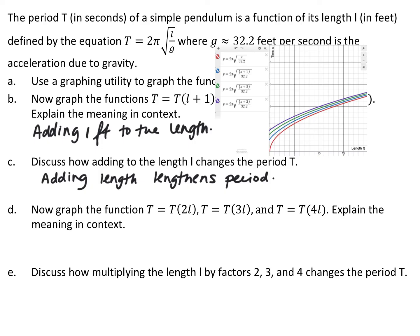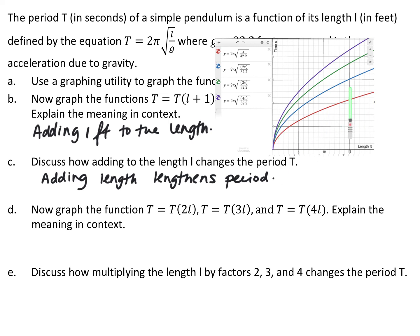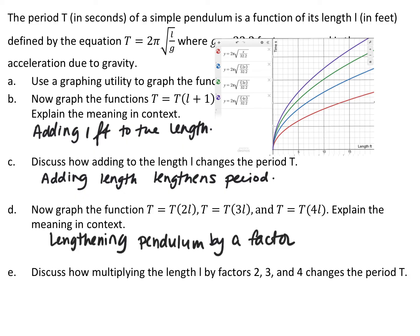Now we look at T(2l), T(3l), and T(4l). The red one is still the original, and each subsequent graph uses 2l, 3l, and 4l. When multiplying length by a factor, we're lengthening the pendulum by that factor, and we can see it takes more and more time for one period to occur. Both cases show that the longer the pendulum, the longer the period will be. It can be hard to picture transformations in context, but you have to think about what's being done and how it affects your x and y coordinates.